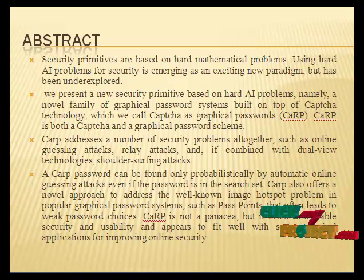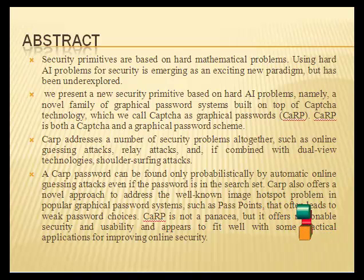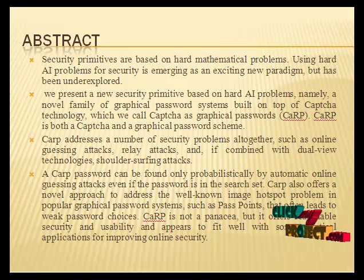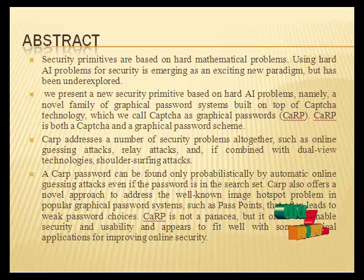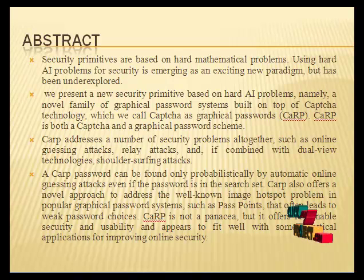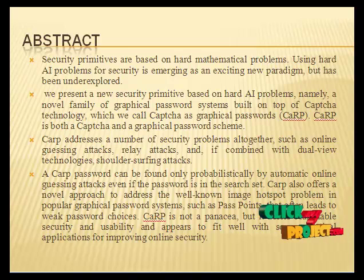CARP addresses a number of security problems altogether, such as online guessing attacks, relay attacks, and if combined with dual view technologies, shoulder surfing attacks. A CARP password can be found only probabilistically by automatic online guessing attacks even if the password is in the search space. CARP also offers a novel approach to address the well-known image hotspot problem in popular graphical password systems,